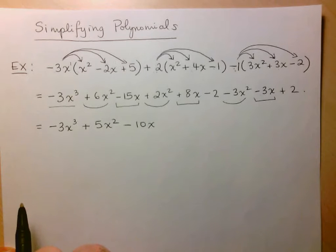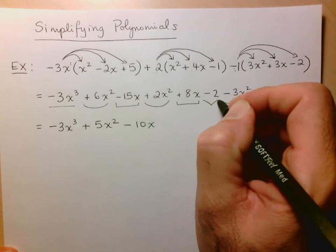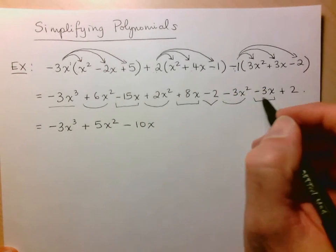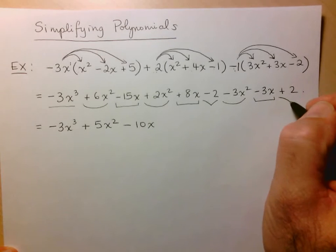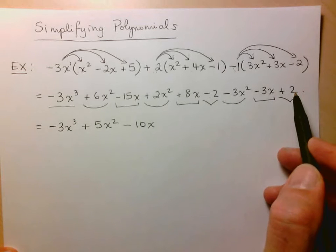And lastly, we have our constant terms. So here it looks I've got a minus 2 and the only other constant term I have here is the plus 2. So we do minus 2 plus 2. Well, hey, that's just equal to 0.